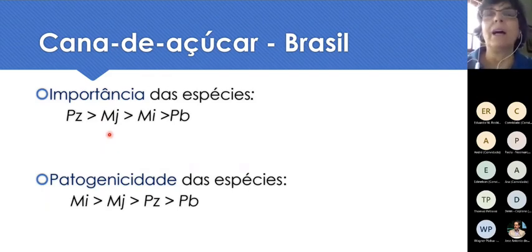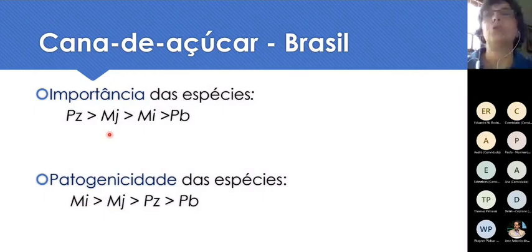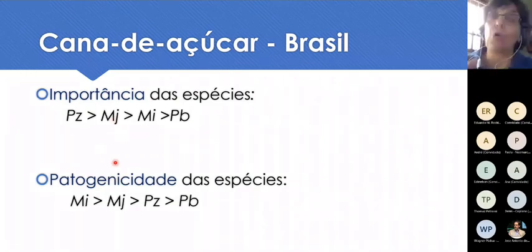Não é raro eu ir até um produtor e encontrar um Meloidogyne. Não, isso está errado — nós temos que tratar quando temos populações acima do nível de controle, ou para o conjunto das espécies.